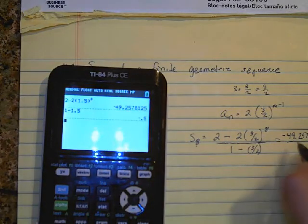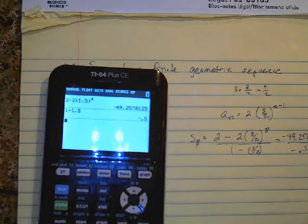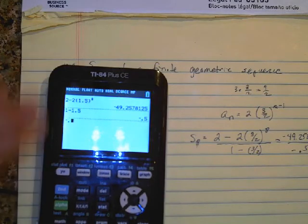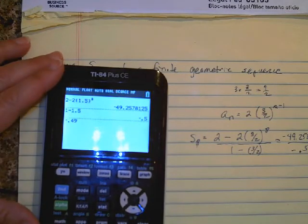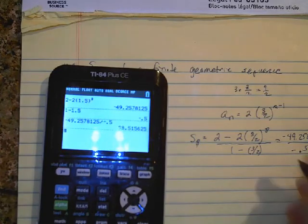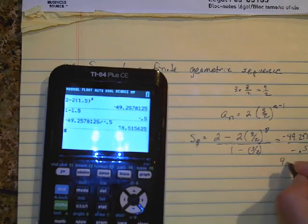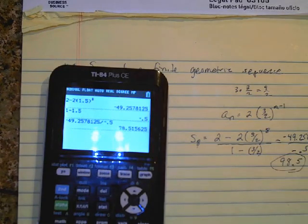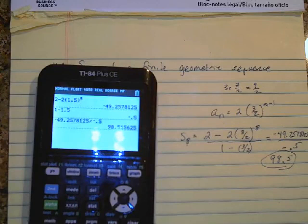One minus one and a half is negative point five. So when I divide those two numbers I get 98.5. And on our homework today it's going to ask us to round to the nearest ten, so the sum of the first eight terms is 98.5.